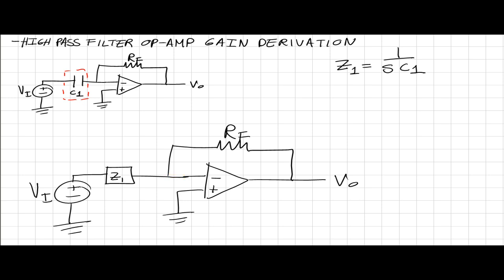This is what we end up with, and once again it's just about applying the formulas from the first video of this playlist. We have the voltage at the inverting input, the voltage at the non-inverting input, and we also have our current i_in, as well as i1 and i2, which runs across the feedback resistor.